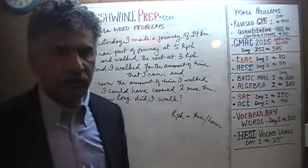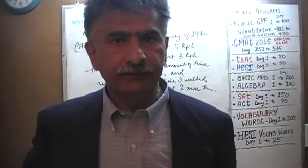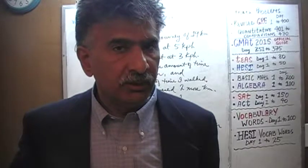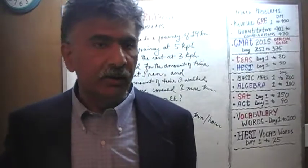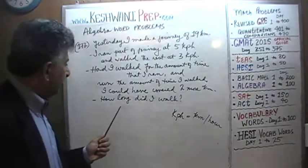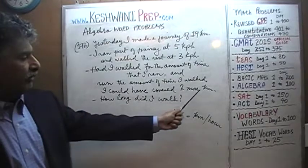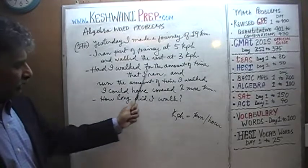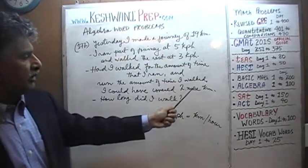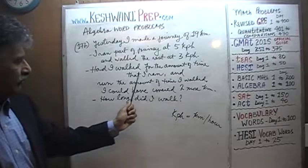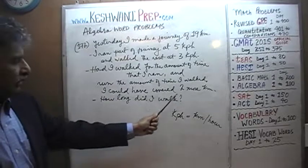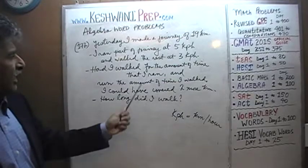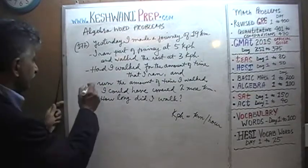What is going to be our game plan, our strategy, our line of attack? In order to understand what a viable strategy would be, we have to first understand what we are being told and what we are being asked. At the end they are asking us how long did I walk. The second part tells us the total distance walked is 2 kilometers more, so 21 kilometers. If we can figure out the time period for each segment, we can solve for total distance, and then figure out how long I actually walked in the actual scenario - not the reverse scenario.